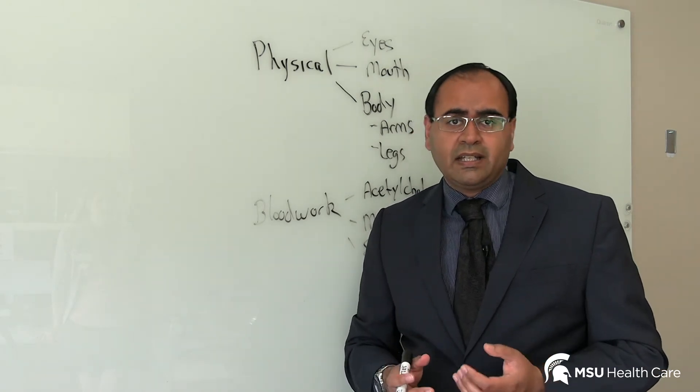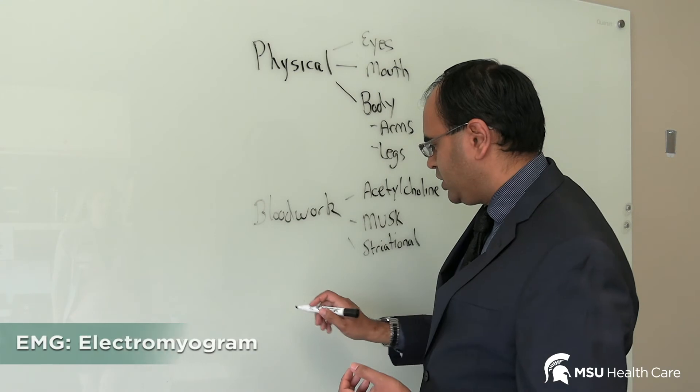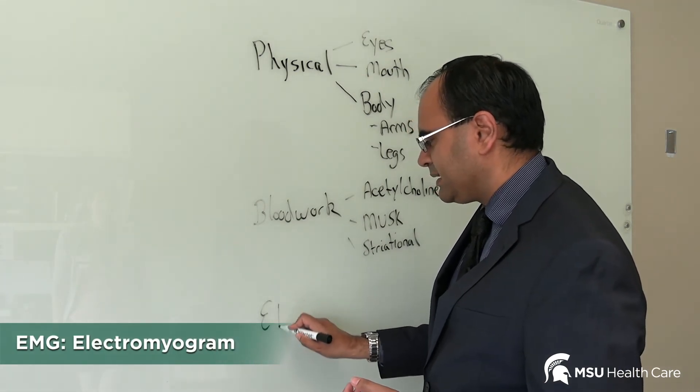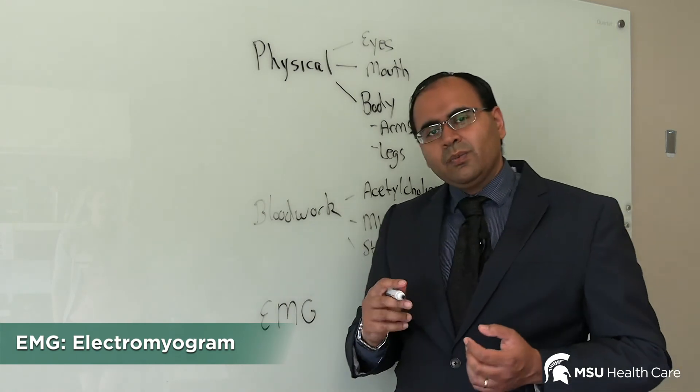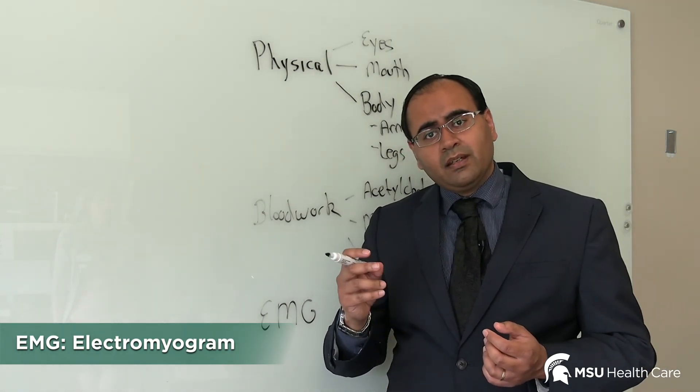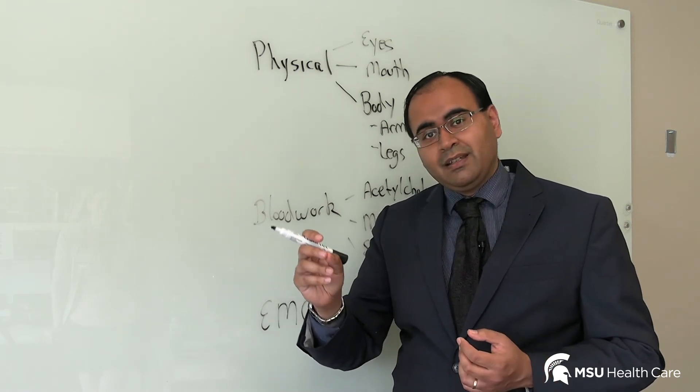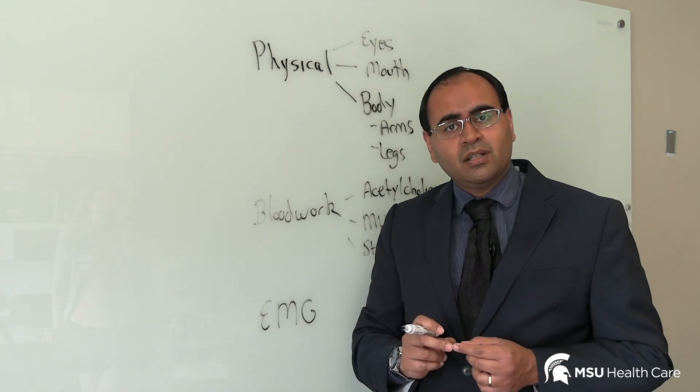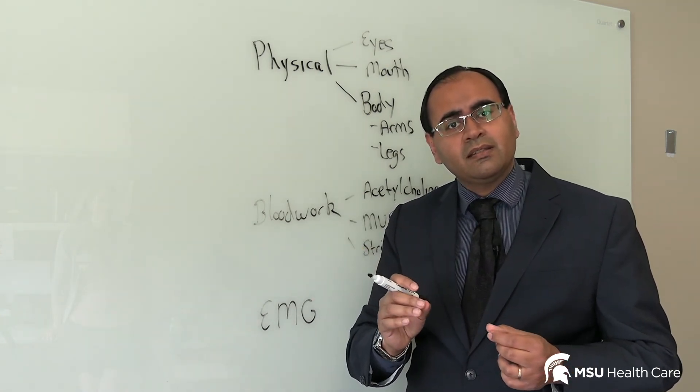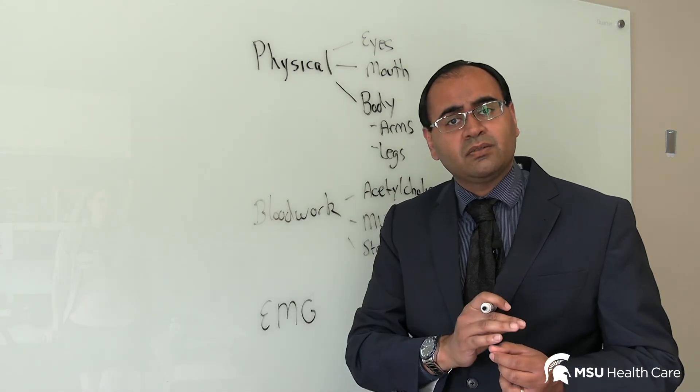The third part of diagnosing myasthenia gravis is the EMG, also known as the electromyogram. With the EMG, we apply a stimulus, that is we shock you, and we get that stimulus to go down a nerve and cause a muscle to twitch. What we're trying to understand is how reliably does the nerve cause the muscle to twitch.